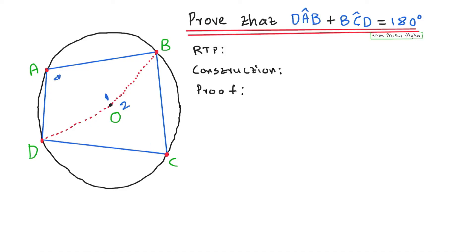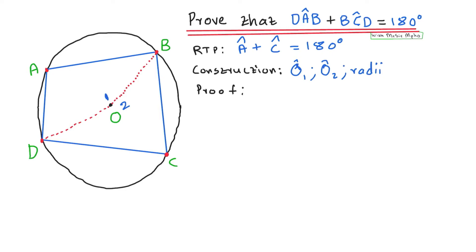Now write your required to prove. We're proving that angle A plus angle C equals 180 degrees — that's the RTP. For the construction, you write down what you constructed: you constructed angle O1, angle O2, and radii OB and OD.